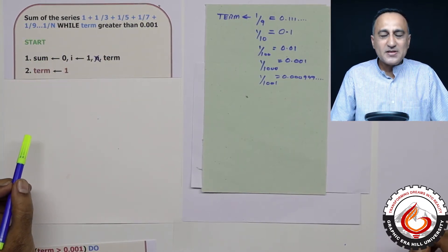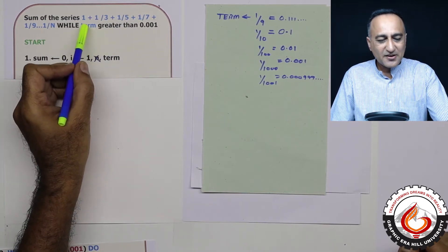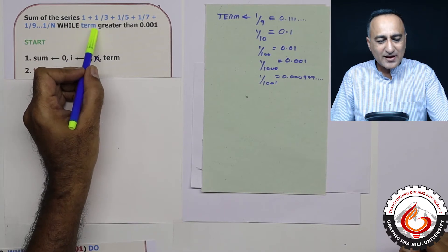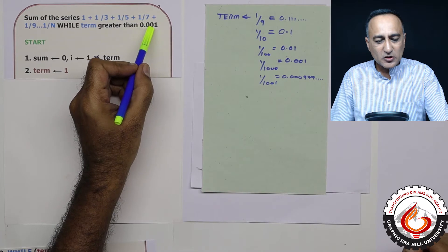But this problem is a little different from what we have discussed before in the sense that it is saying continue to find the sum as long as the value of the term is greater than 0.001.